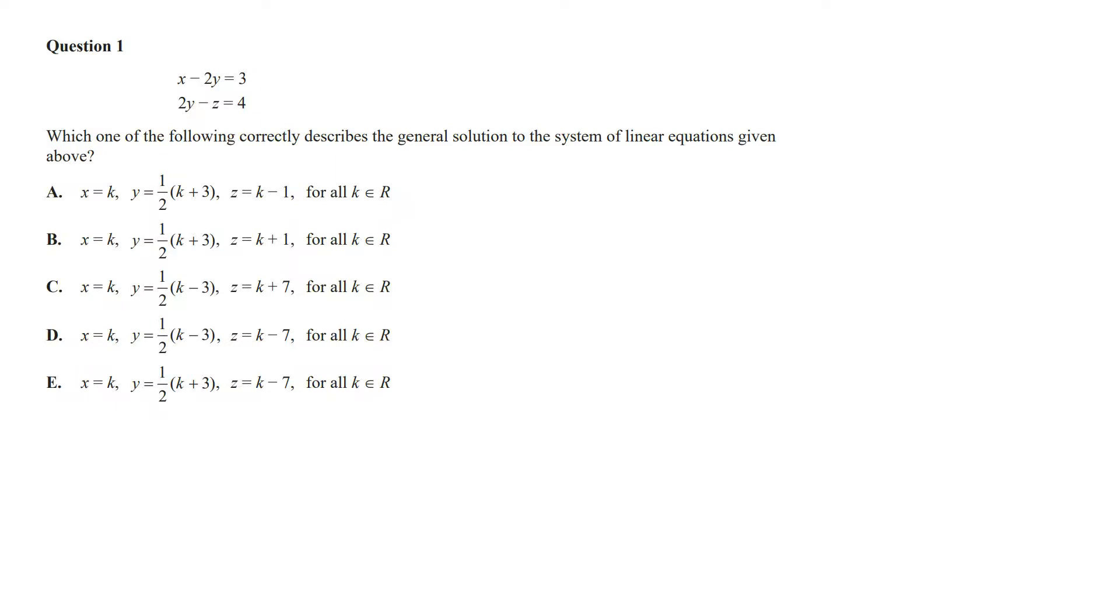We've got, which of the following correctly describes the general solution to the system of linear equations given above? Looking at the options, the value of x is equal to k for all of them, and so subbing x equals k